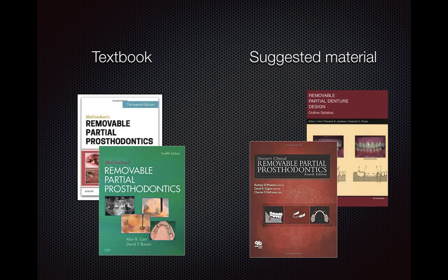If you have any questions, please feel free to ask me anytime or send me an email. All content should also refer to the textbook. McCracken's Removable Partial Prosthodontics is the newest one on the market. On the right side, the suggested material — Stewart's Clinical Removable Partial Prosthodontics — is another very famous textbook. It's not updated very often, but it's a little easier to read compared to McCracken's. Removable Partial Dental Design is a syllabus more closely related to the SceneLab projects you'll practice. All textbooks and suggested materials can be found on Amazon or in the library.